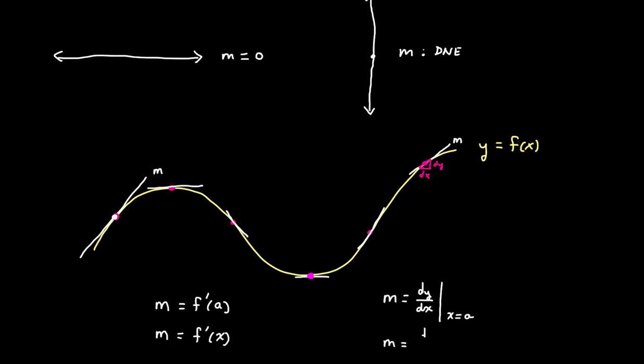So dy dx — the instantaneous change in y over change in x at x equals a — is the same thing as the slope. We can also talk about it as a function, and then I would write dy dx as a function, or dy dx of x, to indicate the derivative function. So big picture, a derivative — which is one branch of calculus — is simply talking about the slope. And slope from algebra has a whole host of meanings: instantaneous rate of change, such as velocity, and so on.